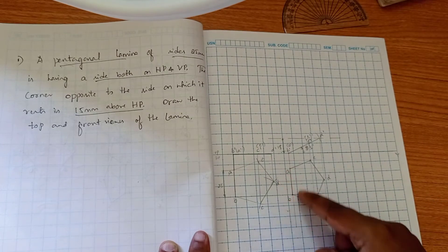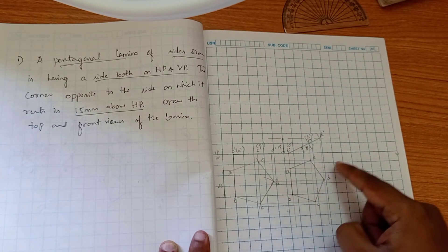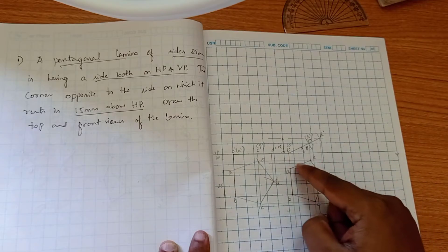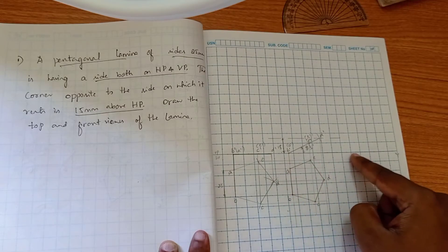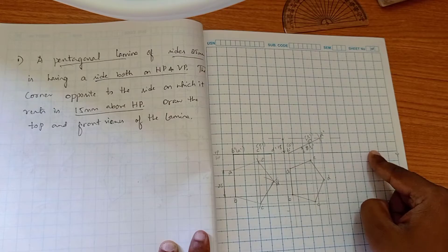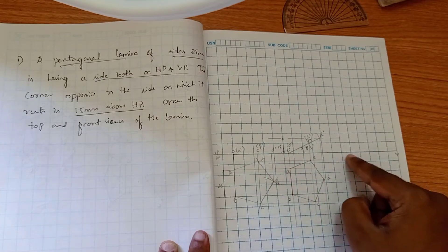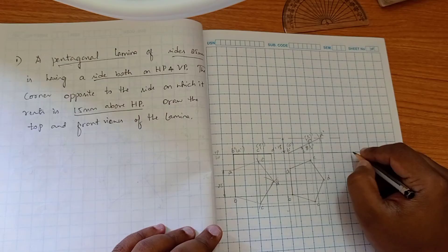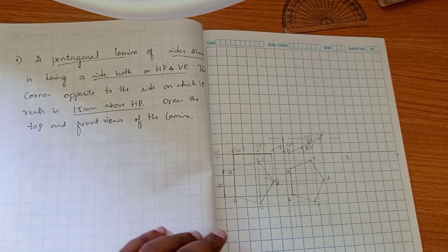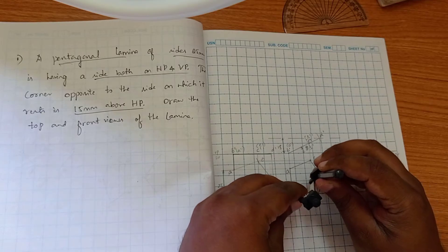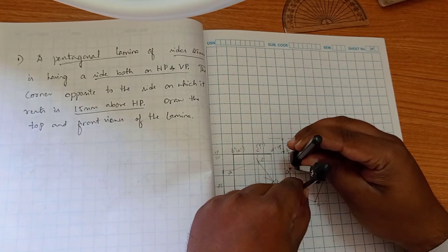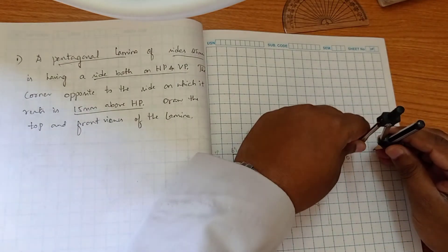We will take this AB edge and make it touch the XY line. By touching this AB edge to the XY line, we are making sure this AB edge is touching the VP plane. First, I will take a reference point of B here, from B to A.